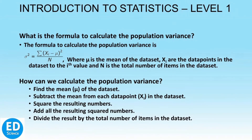The formula to calculate the population variance sigma squared is as shown in the slide. Here, mu is the mean of the data set, xi are the data points up to the ith value, and n is the total number of items in the data set. To calculate the population variance, we follow these steps: first, find the mean of the data set; then subtract the mean from each data point; then square the resulting numbers; then add all the resulting squared numbers; and finally divide the result by the total number of items in the data set.